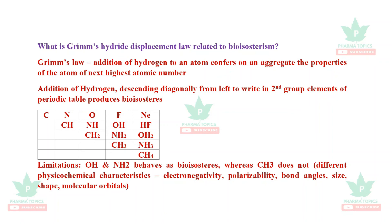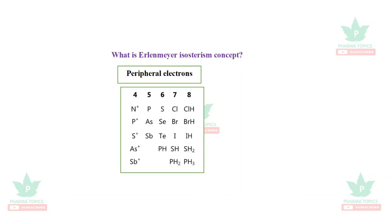Grimm's hydride displacement law: the law states that addition of hydrogen to an atom confers on the aggregate the properties of the atom of the next highest atomic number. So carbon — the next atom in the periodic table is nitrogen, and adding one hydrogen to carbon gives it nitrogen-like properties; adding CH2 to N progresses similarly. This works by descending diagonally from left to right in second-group elements. However, there are limitations: OH and NH2 behave as bioisosteres, but CH3 does not, due to different physicochemical characteristics such as electronegativity, polarizability, bond angles, and molecular orbitals.